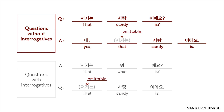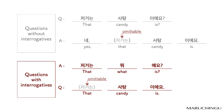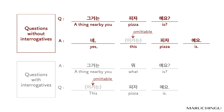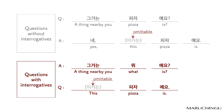저거는 사탕이에요? — 네, 사탕이에요. 저거는 뭐예요? — 사탕이에요. 그거는 피자예요? — 네, 피자예요. 그거는 뭐예요? — 피자예요.